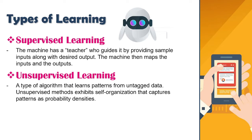It is called supervised learning because the process of an algorithm learning from the training dataset can be thought of as a teacher supervising the learning process. We know the correct answers. The algorithm iteratively makes predictions on the training data and is corrected by the teacher. Learning stops when the algorithm achieves an acceptable level of performance.